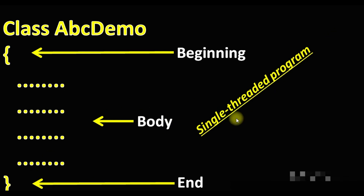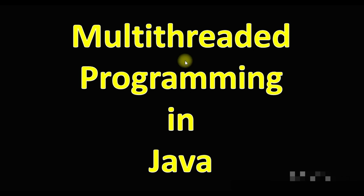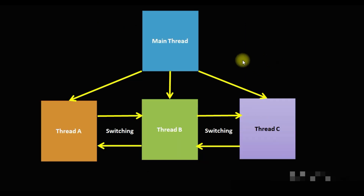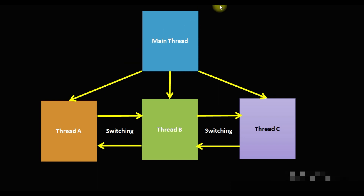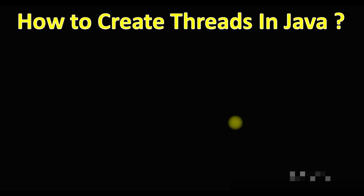Whatever main method classes we created are basically single-threaded programs. But today our aim is to learn multi-threaded programming in Java. In this diagram, we have a main thread that initiates Thread A, Thread B, and Thread C. Once initiated, these threads run concurrently and share resources jointly. This is the multi-threading concept.